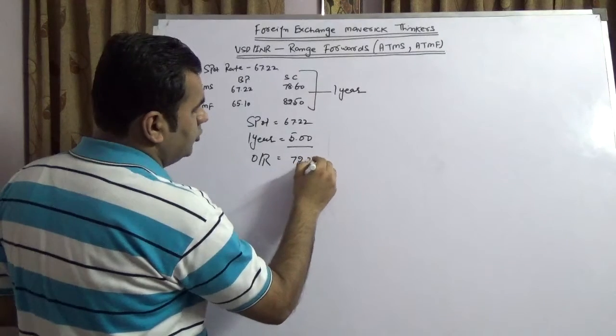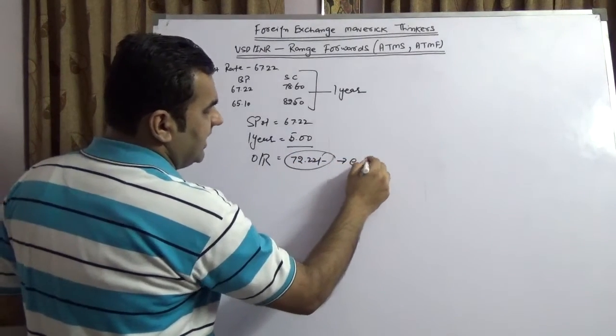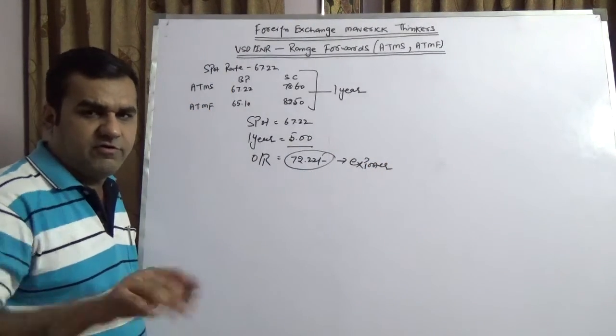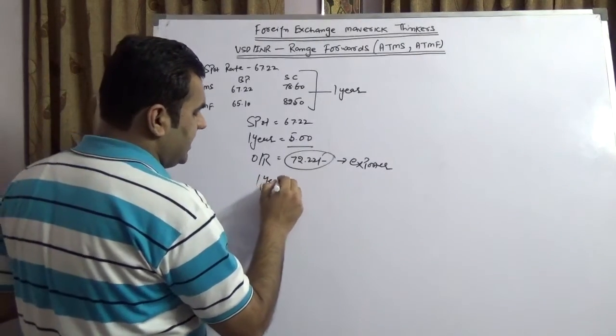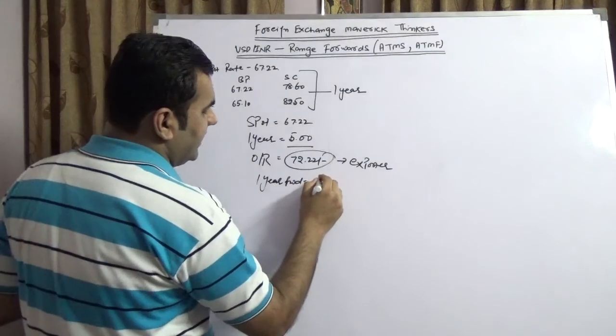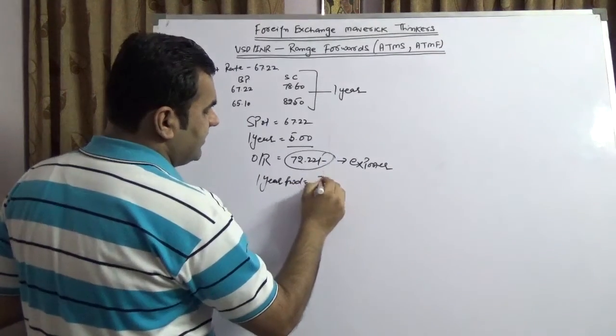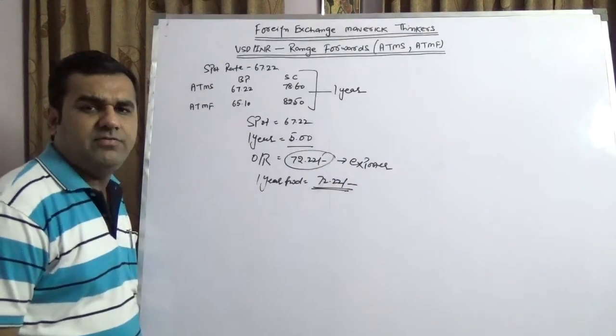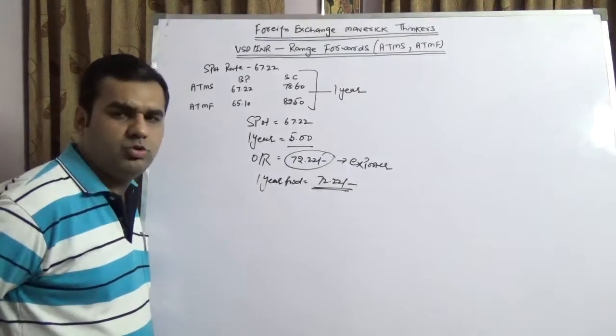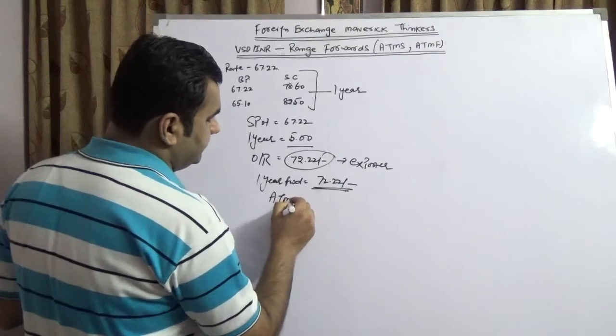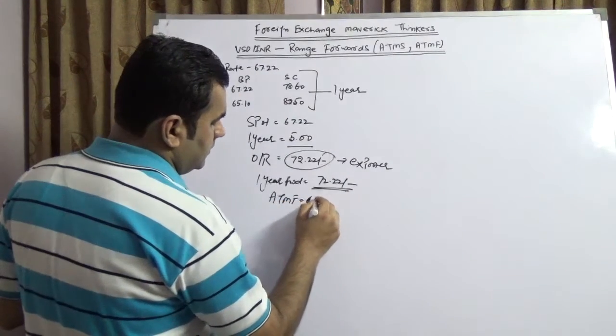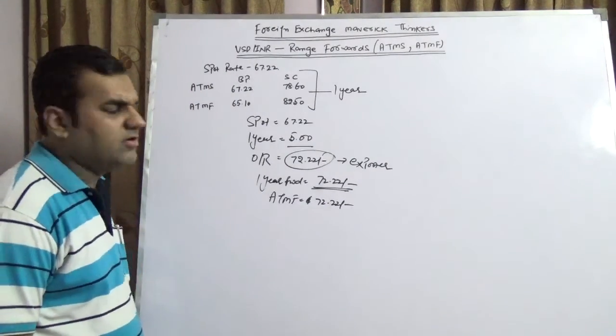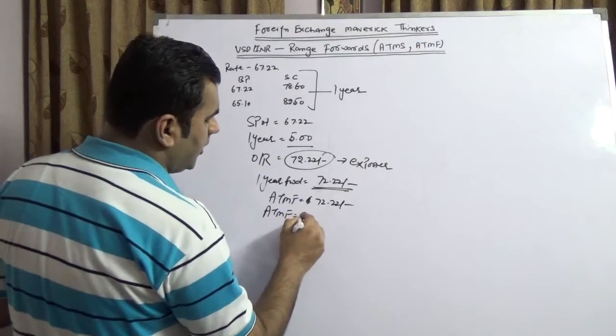So the outright rate would be 72.22 for exporter. If today an exporter books a forward contract for one year down the line, he would be getting the rate 72.22. Now what is this 72.22? This 72.22 is at-the-money forward. At-the-money forward equals spot rate plus premium.